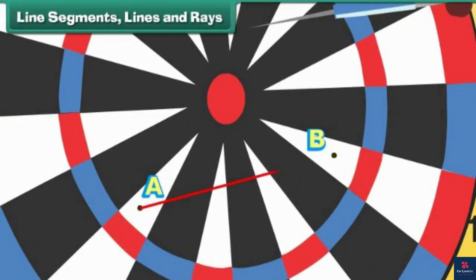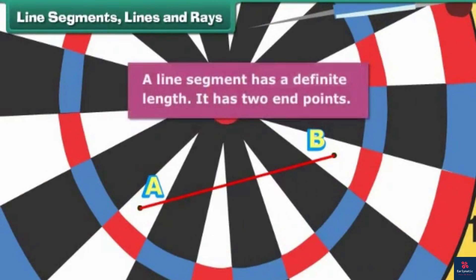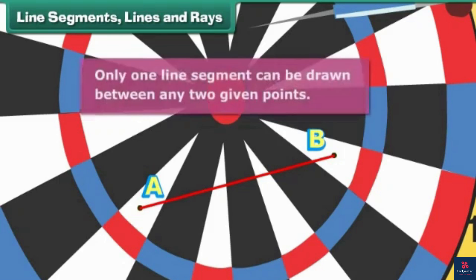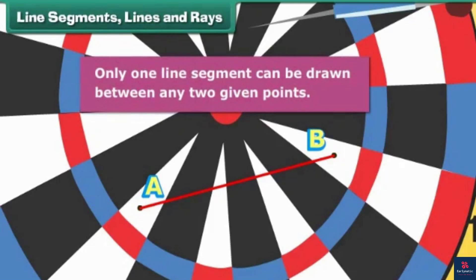Let us remove another dart to reveal another point. We name the two points A and B. We now join the two points. We get the line segment AB. A line segment has a definite length and it has two end points. Only one line segment can be drawn between any two given points.